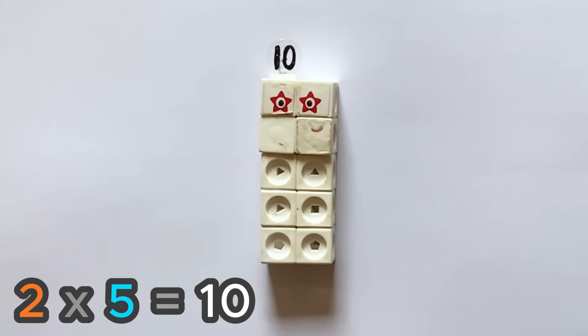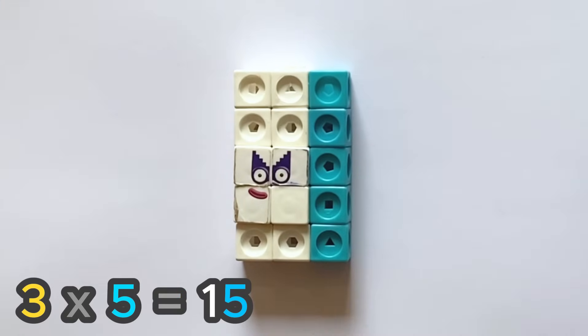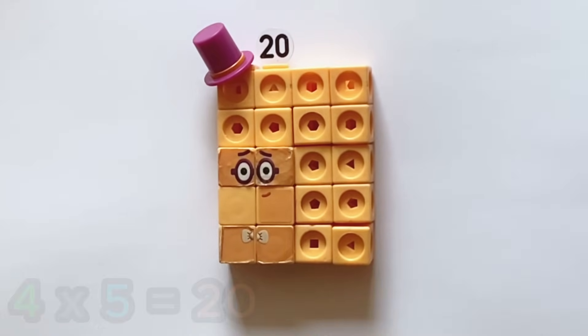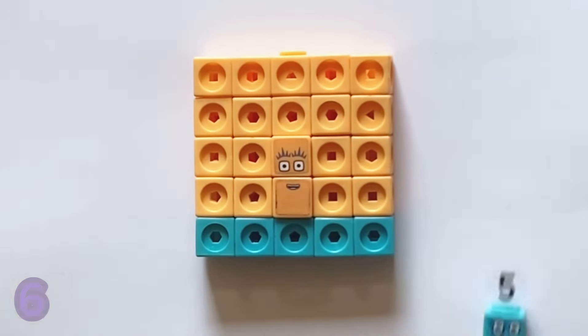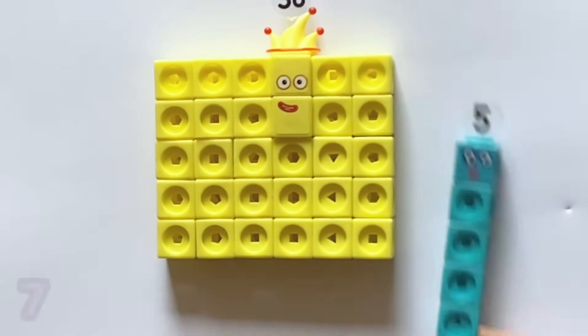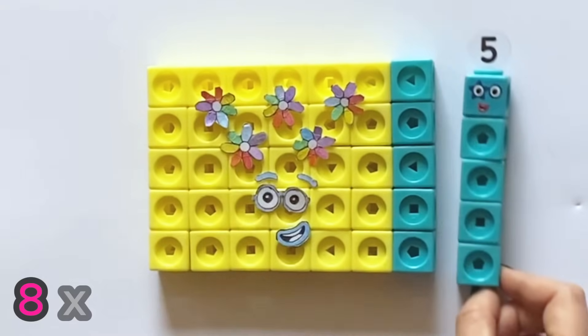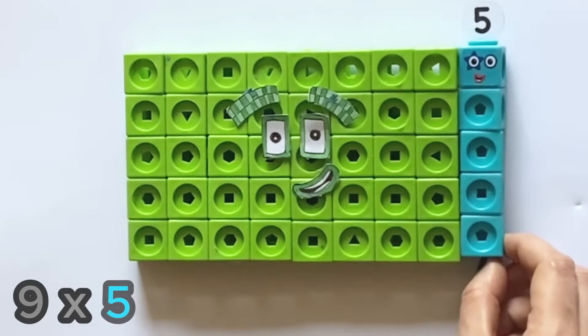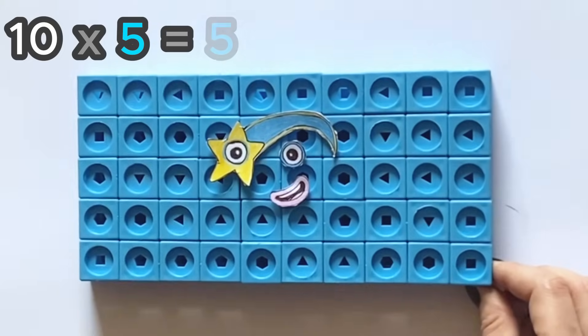Next is the 5 times table. 1 lots of 5 is 5. 2 lots of 5 are 10. 3 lots of 5 are 15. 4 lots of 5 are 20. 5 lots of 5 are 25. 6 lots of 5 are 30. 7 lots of 5 are 35. 8 lots of 5 are 40. 9 lots of 5 are 45. And lastly, 10 lots of 5 equal 50.